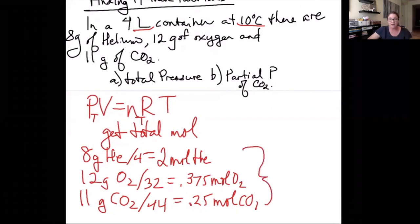So if I add these all up, 2 plus 0.375 plus 0.25 gives me a total of 2.625 moles. That's what I want to plug into PV equals NRT to get the total pressure.